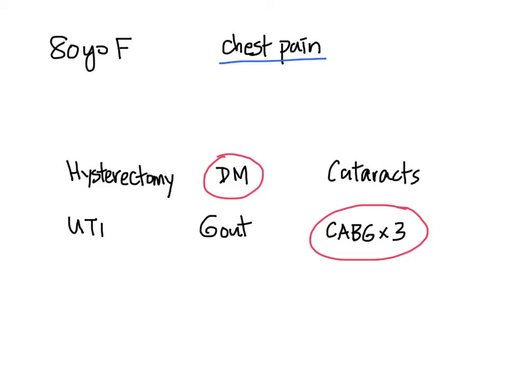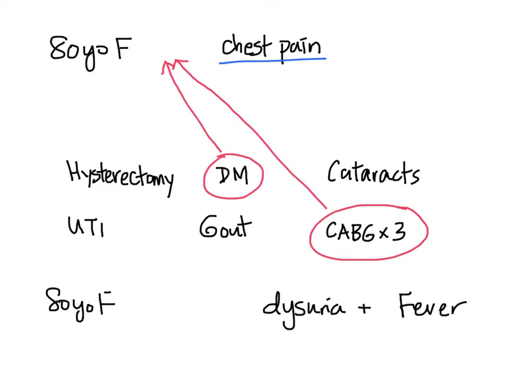Therefore, when you present, your one-liner would be something like: 'This is an 80-year-old female with a history of diabetes and triple bypass surgery who has a chief complaint of chest pain.' Let's say the same patient presents with dysuria and fever. Which past medical history would you put in the one-liner this time? You would probably choose UTI and diabetes. Therefore, based on the chief complaint, the past medical history that you choose to include in the one-liner might differ.